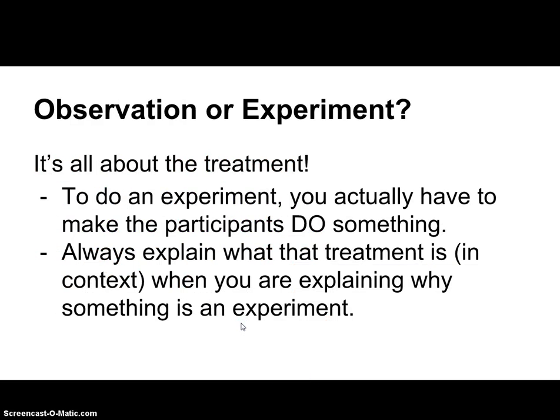So how do you tell the difference between an experiment and an observational study? It really comes down to the treatments. To do an experiment, you actually have to make participants do something. When you explain this — like if you have a problem where you have to explain why something is an observational study or an experiment — always explain what the treatment is in the context of the problem. Don't just say there are no treatments done; you have to say specifically, for example, because Beaker wasn't actually given shock therapy. If we were observing data on shock and didn't actually give people shock, that's an observation. If we actually shocked them, that's an experiment. You have to be clear on your context. So that's the difference between an observation and an experiment — we'll take a look at some different examples and you'll determine which is which.